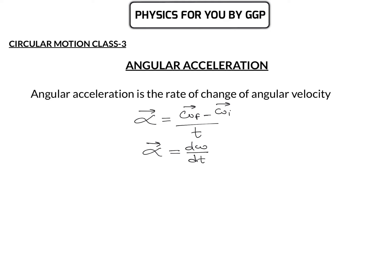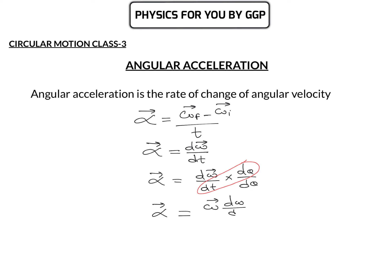If there is a change in angular velocity by d omega in a small duration of time dt, we can find the instantaneous angular acceleration using the differential equation d omega divided by dt. We can also write it in the form d omega divided by d theta multiplied by d theta divided by dt, where d theta by dt represents angular velocity. These are the basic equations used for the calculation of angular acceleration.